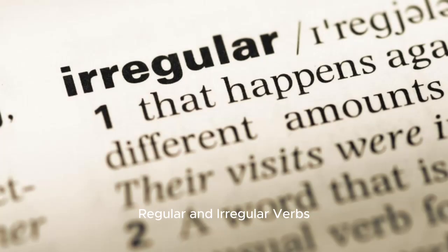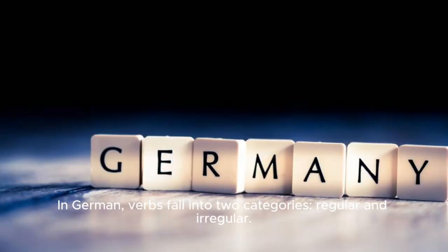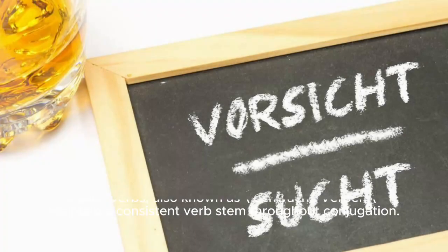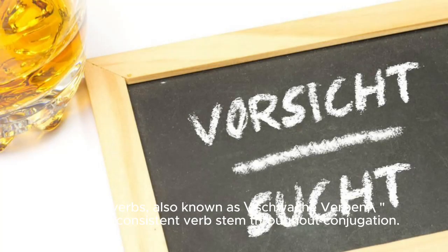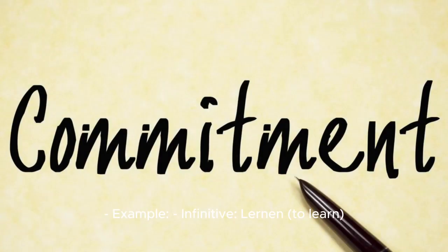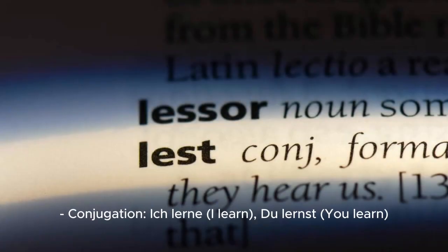Regular and Irregular Verbs: In German, verbs fall into two categories — regular and irregular. Regular verbs, also known as schwache Verben, maintain a consistent verb stem throughout conjugation. The stem is coupled with an ending based on the subject. Example — infinitive: lernen (to learn); conjugation: ich lerne (I learn), du lernst (you learn).